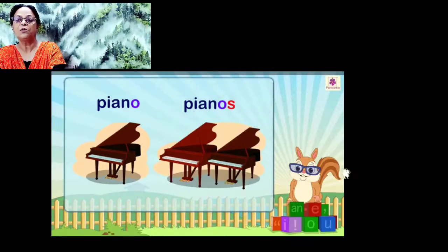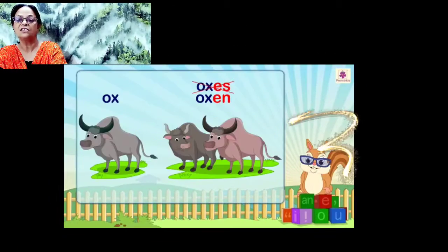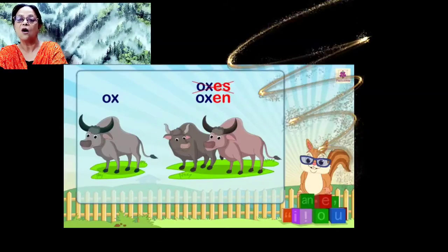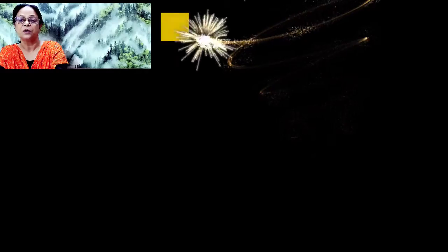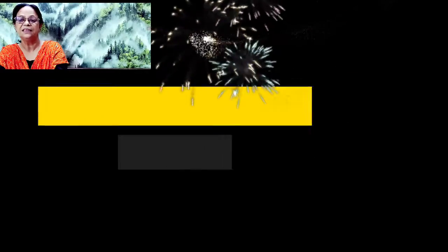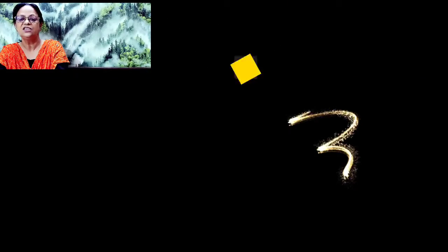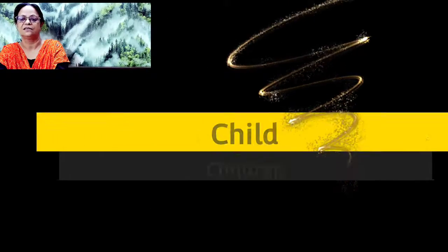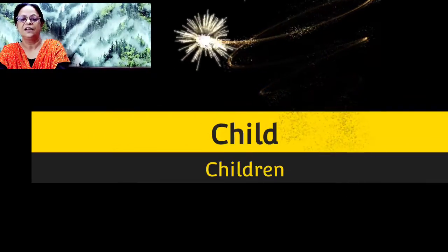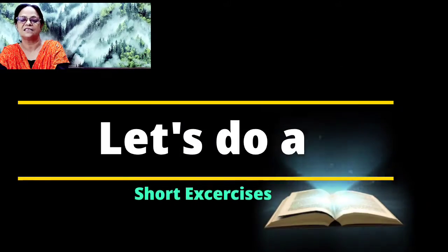Look at the plural of ox, which is oxen. Tooth becomes teeth. Child becomes children. Let's do a short exercise.